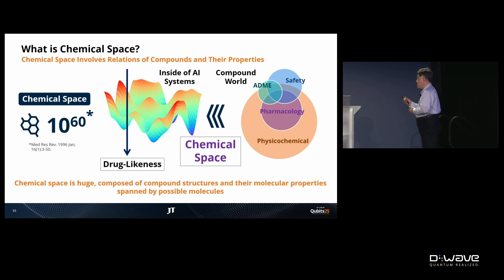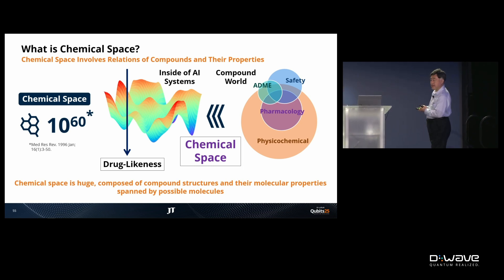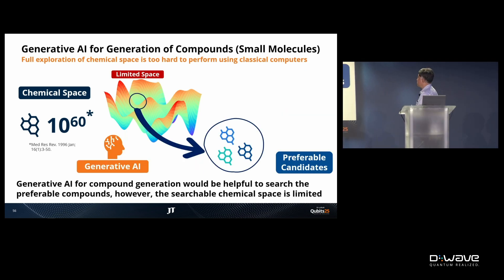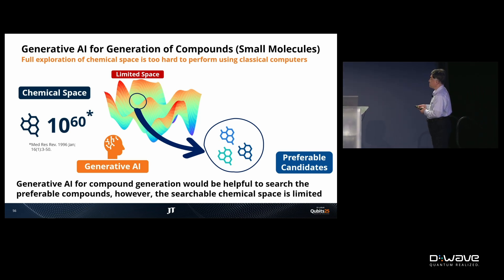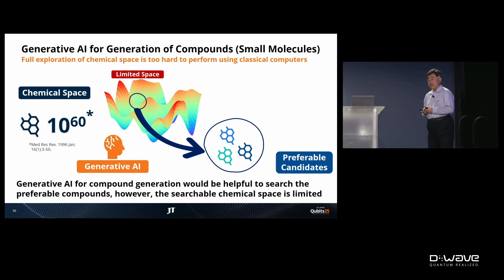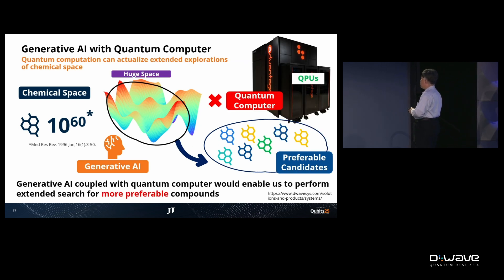In the training phase, we explore and identify the lower energy state, which corresponds to more appropriate drug-likeness. However, when using classical computation, the exploration is very restricted — we can only explore a limited space and identify local minima. This is a very serious problem in current AI technologies.